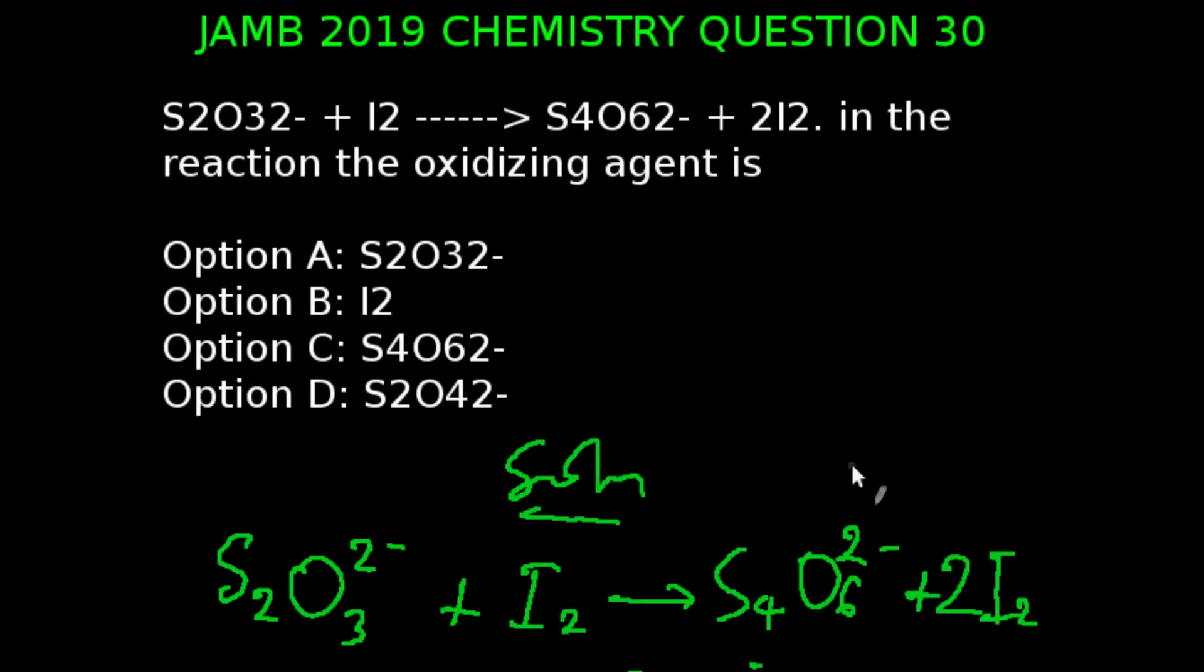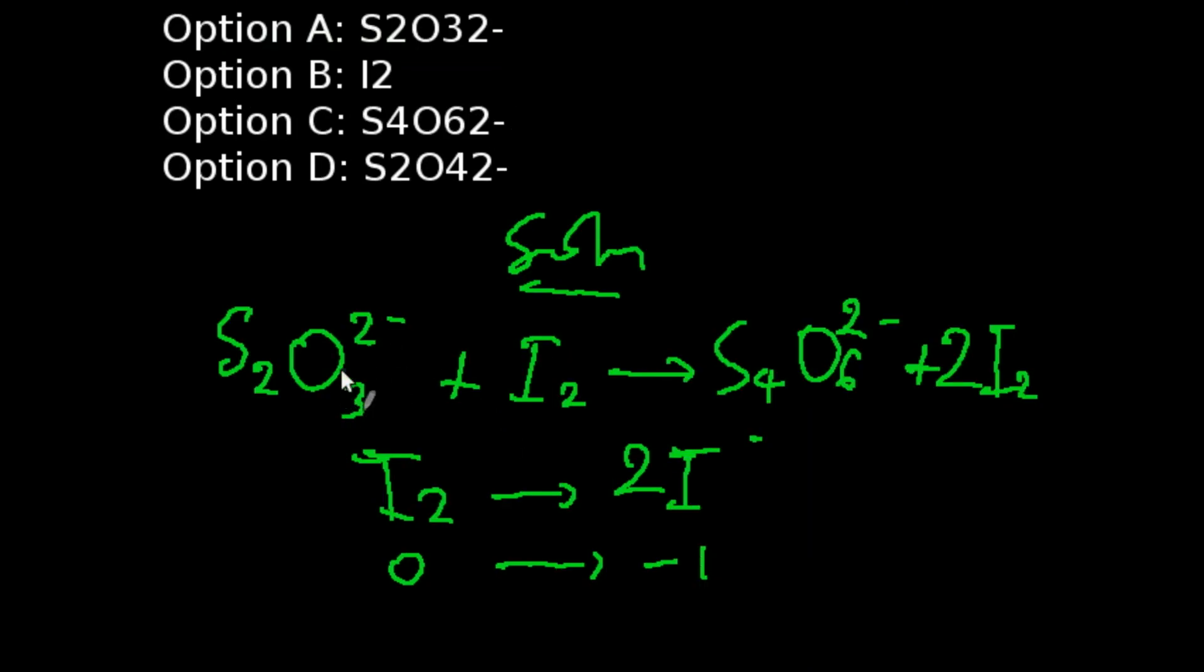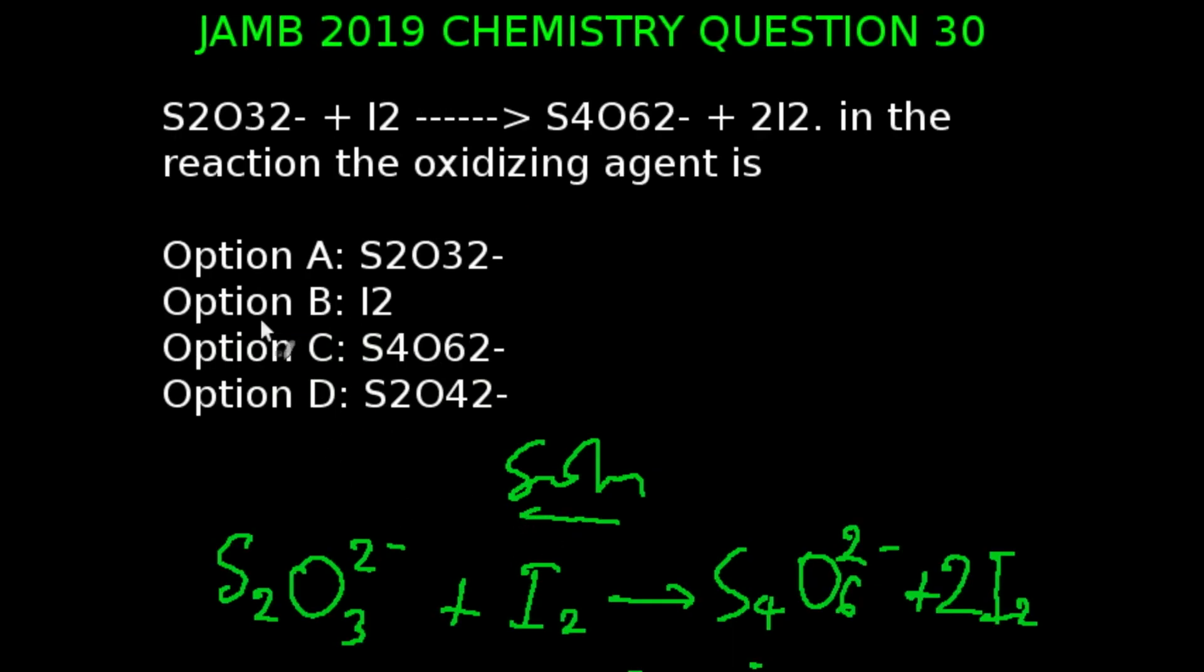Question 30 of the JAMB 2019 Chemistry Examination. We are given a reaction above. Let's look at the reaction below. This is the same reaction rewritten. So the question is, in the reaction, the oxidizing agent is. Here we have been given iodine reacting with sulfide ion. So from the left-hand side of the equation, we'll be having I₂, and on the other side, the right-hand side, we'll be having two molecules of iodide ion. So the oxidation number obviously has changed from 0 on the left side of the equation to minus 1.